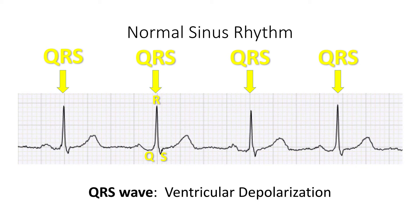The QRS wave represents the ventricular response to the atrial signal, or ventricular depolarization. The QRS is a high-voltage wave with most commonly three components. The Q-wave is the first downward deflection, and usually is a small voltage. Next is the R-wave, which is a tall upward deflection that is usually higher in voltage in most leads. Finally, the S-wave is a downward deflection that occurs after the R-wave.